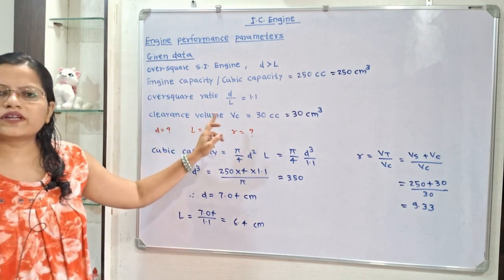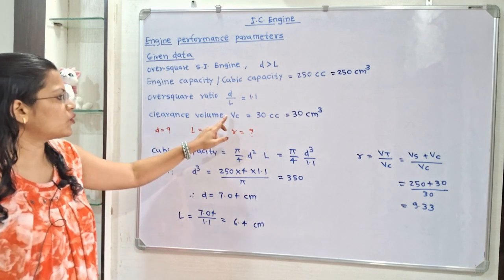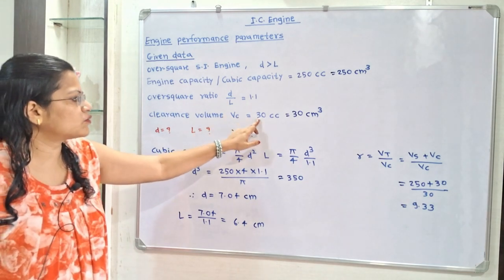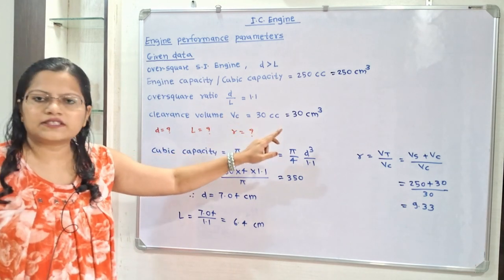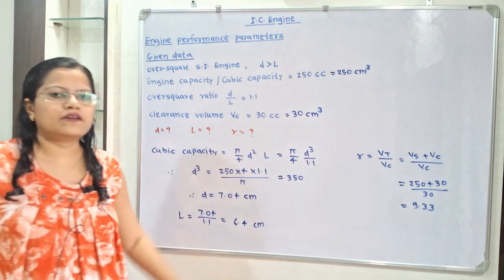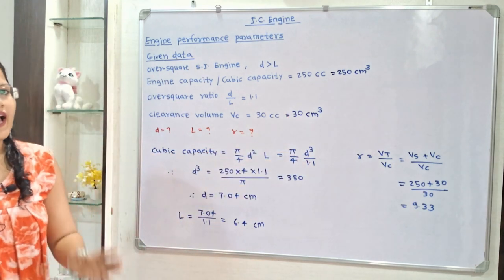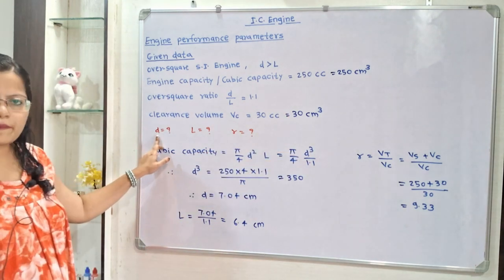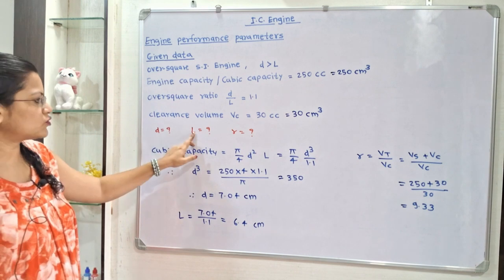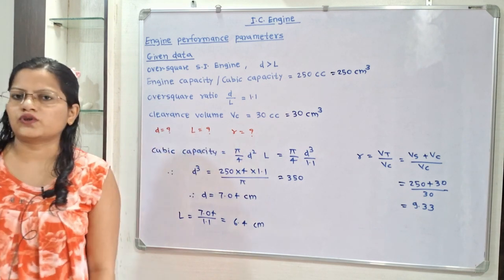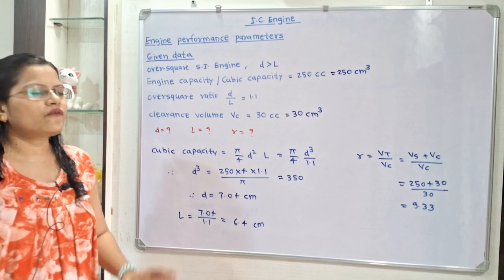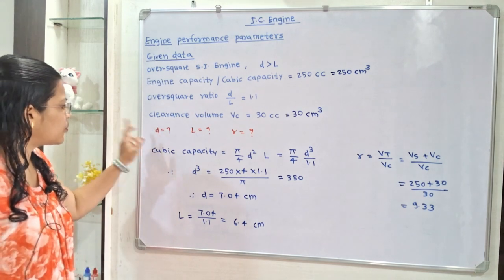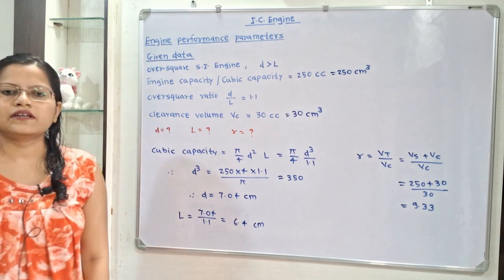Clearance volume notation is Vc and it is equal to 30 cc, that is 30 centimeter cube. We have to find bore diameter D, stroke length L, and compression ratio R. First, we will find out bore diameter D.